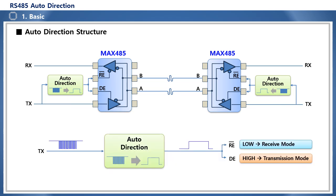When the receiver-enable RE pin, the control pin for receive mode in the MAX485 IC, is low, it is in the receive state. When the driver-enable DE pin for transmit mode is high, it switches to the transmit state. Therefore, if both pins are tied together and set to low, it operates in receive mode, and if set to high, it operates in transmit mode.